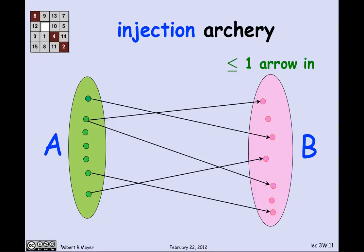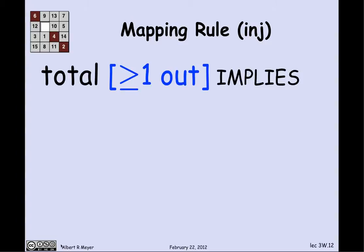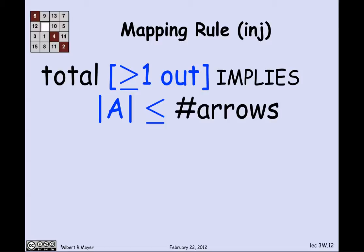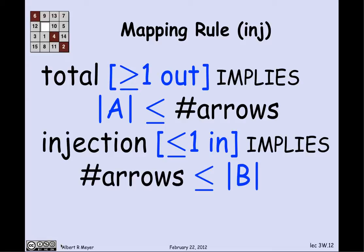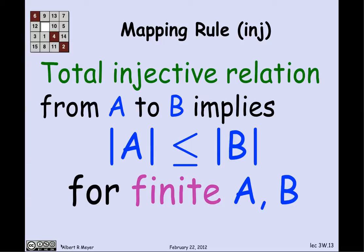The same argument goes for injections. With an injection, there's at most one arrow in to each element. If it's total, there's at least one arrow out of everything, so |A| must be less than or equal to the number of arrows. Since it's injective, there's at most one arrow into each element of B, so B must be big enough to catch all the arrows — the number of arrows is at most |B|. Putting those together: if there's a total injective relation from A to B, then |A| ≤ |B| for finite A and B.